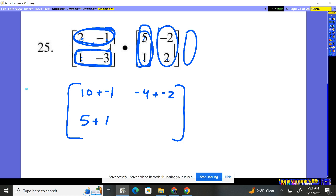Do it again. Then, this row times the next column. 1 times negative 2 is negative 2. Negative 3 times that 2. I messed up. Yeah, 1 times negative 2 is negative 2. Negative 3 times that 2 is negative 6.